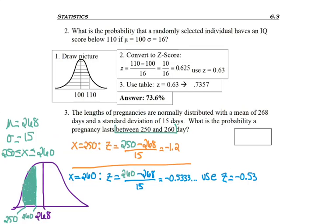So now I'm ready to go in the table. First I'll go to row negative 1.2 and then of course it'll be column 0 because the last digit is a 0. So 0, 0, and I find 0.1151. Remember, that's just giving me this area in this left tail that's clear that I don't want.